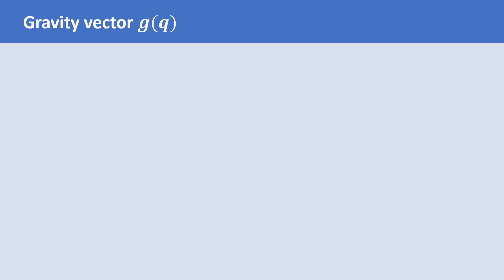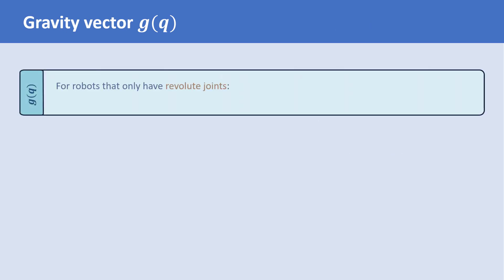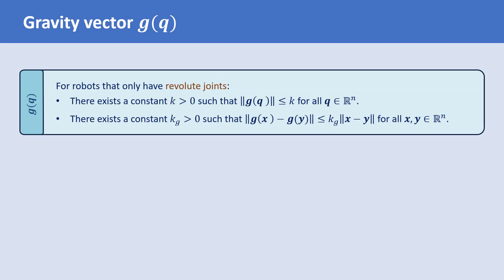We now explain two properties of the gravitational torques vector G. Both properties hold for robots having only revolute joints. The first property is that the gravity vector is bounded: there exists a constant K such that the norm of G is less than or equal to K for all vectors Q. The second property is that the vector G is Lipschitz: there exists a positive constant Kg such that the norm of G(x) − G(y) is less than or equal to Kg times the norm of x − y, for all vectors x and y.